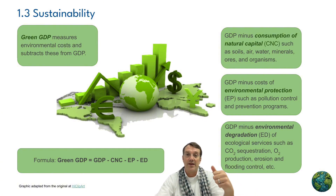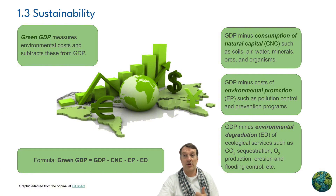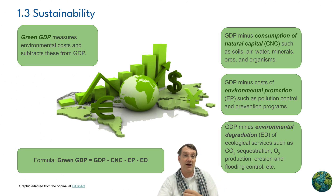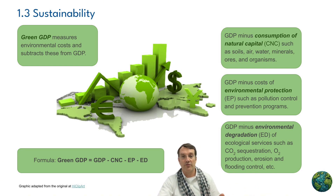Green GDP is based on GDP but also accounts for environmental costs, subtracting the consumption of natural capital such as soils, air, water, minerals, ores, and harvested organisms. It also subtracts the cost of environmental protection programs — pollution control and prevention — as well as the degradation of ecological services, such as carbon sequestration lost when forests are cut down, oxygen production costs, and soil erosion from unsustainable agriculture.